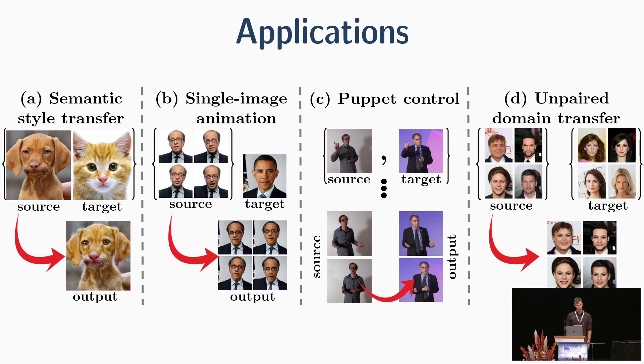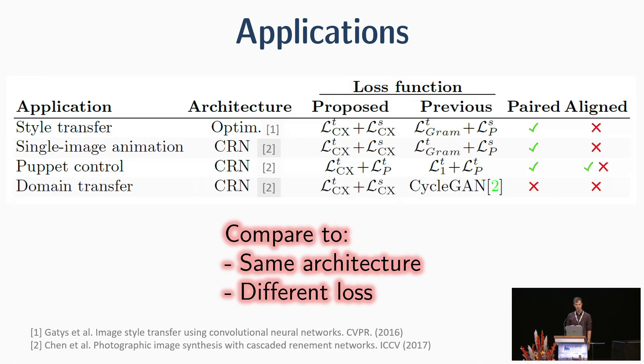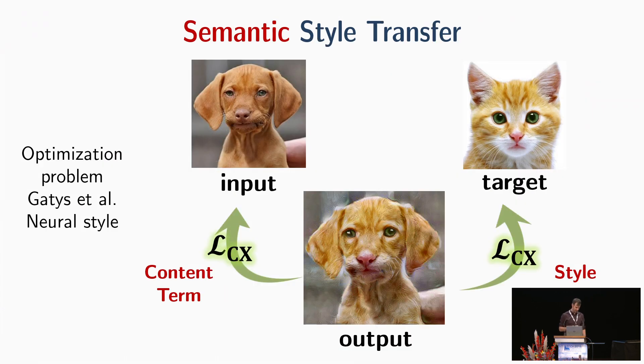We show four different applications, all with non-aligned data. At each application, we adopt a state-of-the-art architecture or optimization problem and replaced only the loss function.